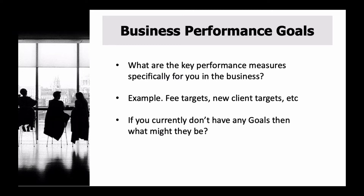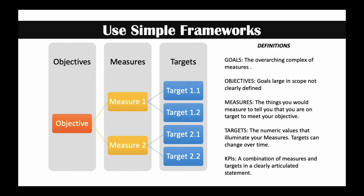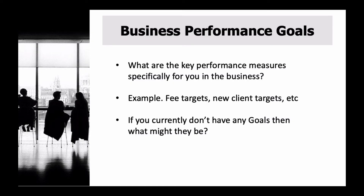Now we're going to look at the three key areas. Business performance goals — what are the key business performance measures specifically for you? They could be things like fee targets, new client targets, a range of different things. If you don't currently have any goals, then what might they be? Plug those into that matrix. Your objective could be to increase sales, and the measures could be fees or new clients. What are the performance goals set for you or that you should set for yourself — specifically for you, not for the entire business, just for you?